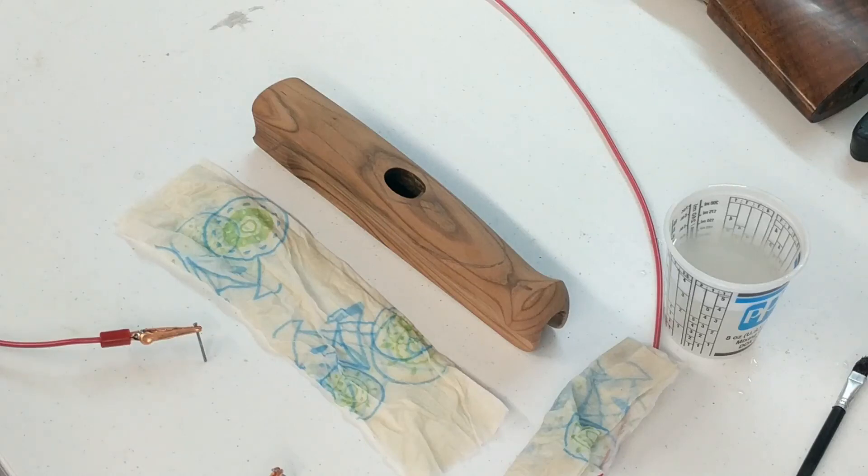Okay, this video is going to be on applying Lichtenberg figures to the forend of an over and under shotgun rather than checkering.